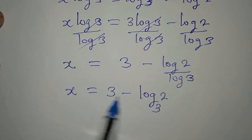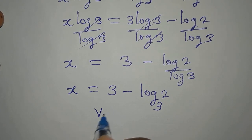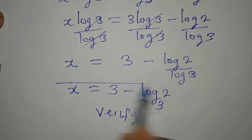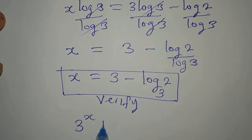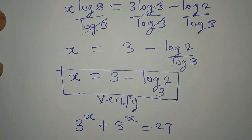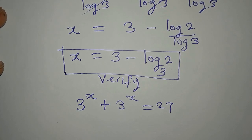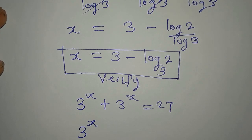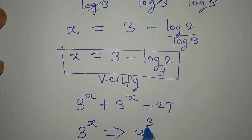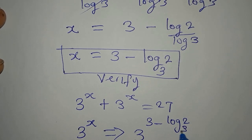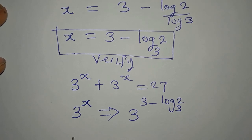Now let's stop at this level and verify. We are verifying 3^x + 3^x equals 27. I'll pick one instance of 3^x and deal with it. 3 to the power of x is the same as 3 to the power of (3 minus log 2 to base 3), because x is the whole expression.